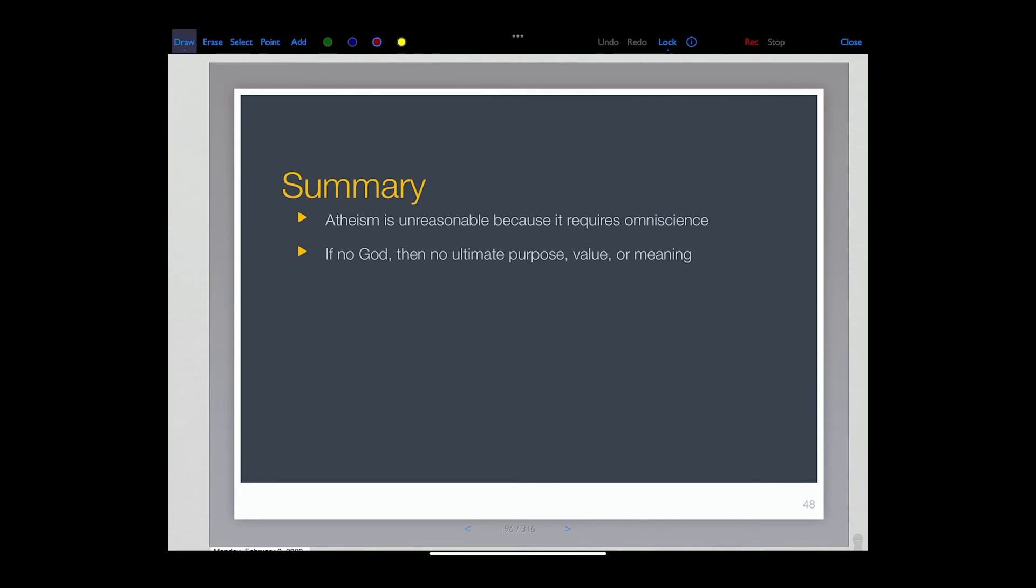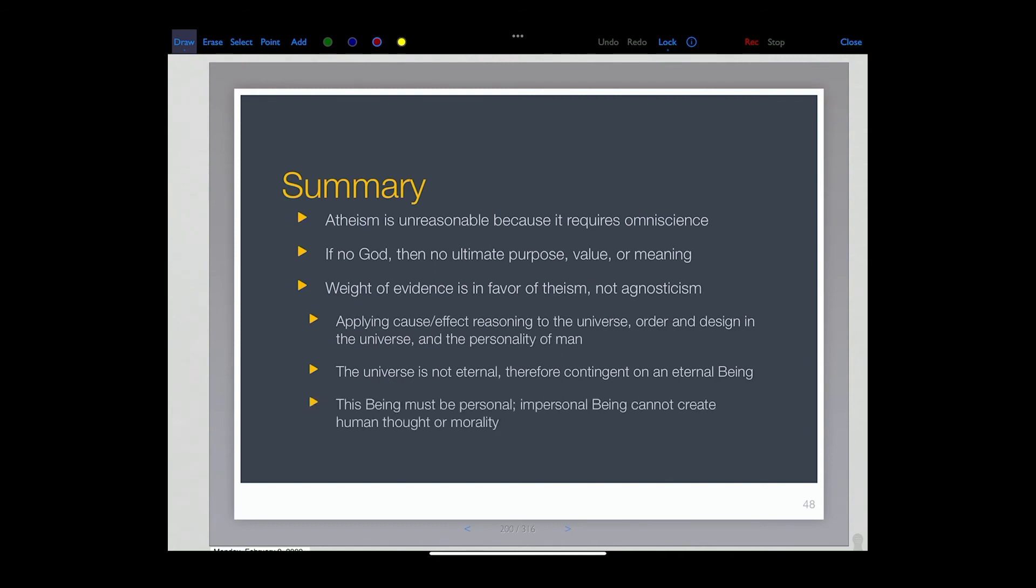One whose character is to be beautiful, and good, and true. And that's what they're ultimately appealing to. The weight of evidence, I'm claiming, is increasingly in favor of theism, and away from agnosticism. And then you apply a cause and effect reasoning to the universe. You see order and design in the universe, and you see the personality of humanity. And if the universe is not eternal, it would be contingent on an internal being. And that being must be personal, because impersonal being can't create thought. It can't create morality. You see, the impersonal cannot account for the personal, which is always a higher level.